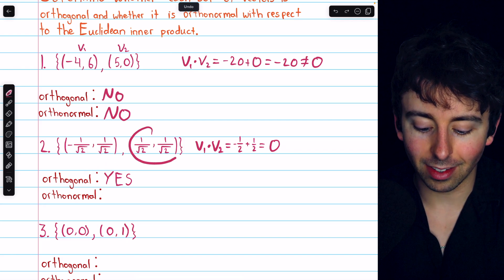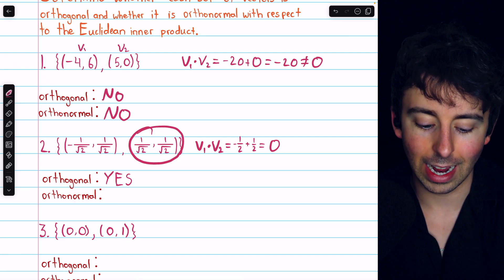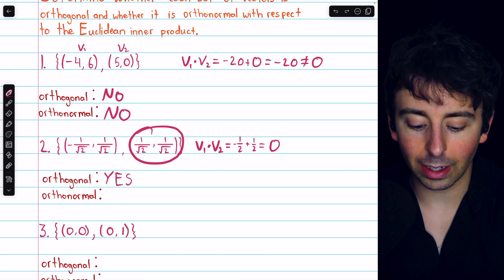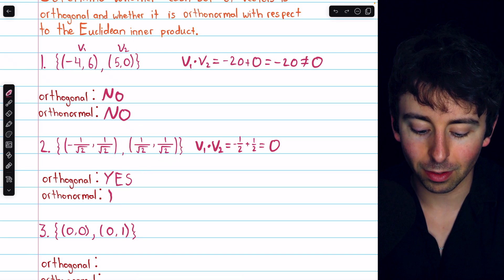Now, this other vector has the exact same norm, since the only difference is negative, which doesn't matter, since we're squaring stuff. So, both of these vectors are unit vectors. Since they are orthogonal unit vectors, yes, they are orthonormal.